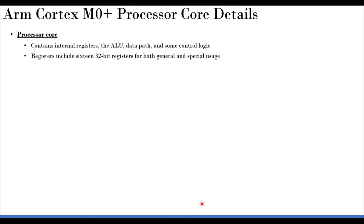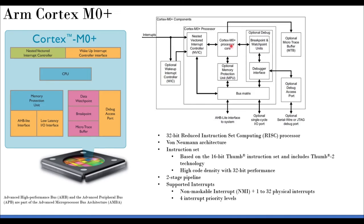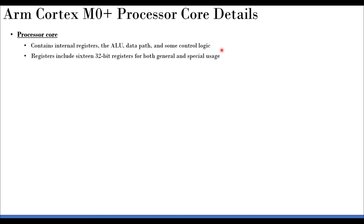The processor core contains internal registers, the ALU, data path, and control logic. There are 16 total 32-bit registers combining special and general-purpose use cases. Thirteen of them (R0–R12) are general-purpose registers used for ALU operations, similar to the accumulator and register B in our 8-bit microcomputer. Three are special registers: stack pointer, link register, and program counter.